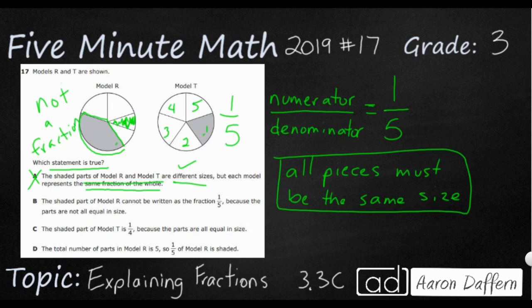B says, the shaded part of model R cannot be written as the fraction one-fifth because the parts are not all equal in size. Well, that looks to be exactly what we just discussed. So I am pretty sure that is going to be my answer.